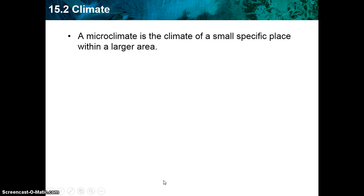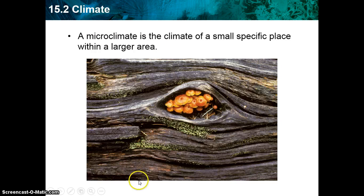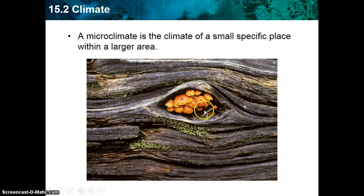We can look at what's called a microclimate. 'Micro' means very small, so a microclimate is the climate of a small, specific place found within a larger area. For example, where these fungi are living inside a dead tree on the forest floor would be considered a microclimate.